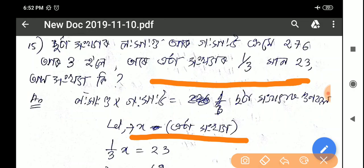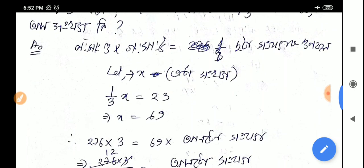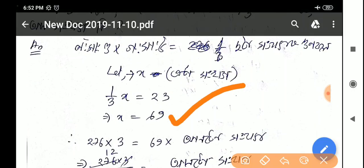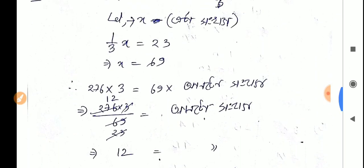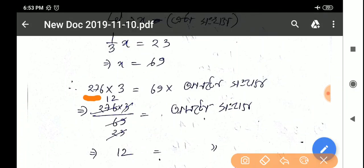For the equation where one-third x equals 23, we multiply both sides by 3 to get x equals 69. But the actual total number is different - if we calculate properly using 76 into 3, we get the correct answer of 69.